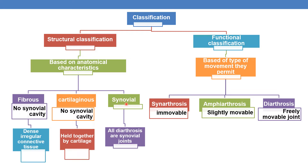Synovial joints are characterized by a synovial cavity. Fibrous and cartilaginous joints have no synovial cavity. Fibrous joints are formed by dense irregular connective tissue as the articulating material, whereas in cartilaginous joints, the articulating material is cartilage — the bones are held together by cartilage. In fibrous joints, the bones are held together by dense irregular connective tissue.